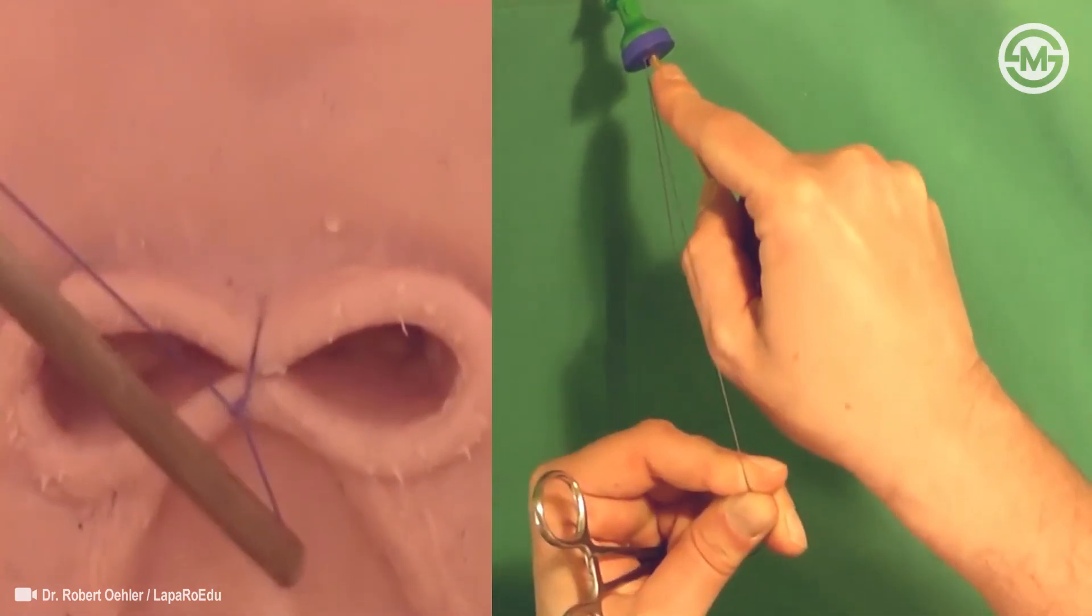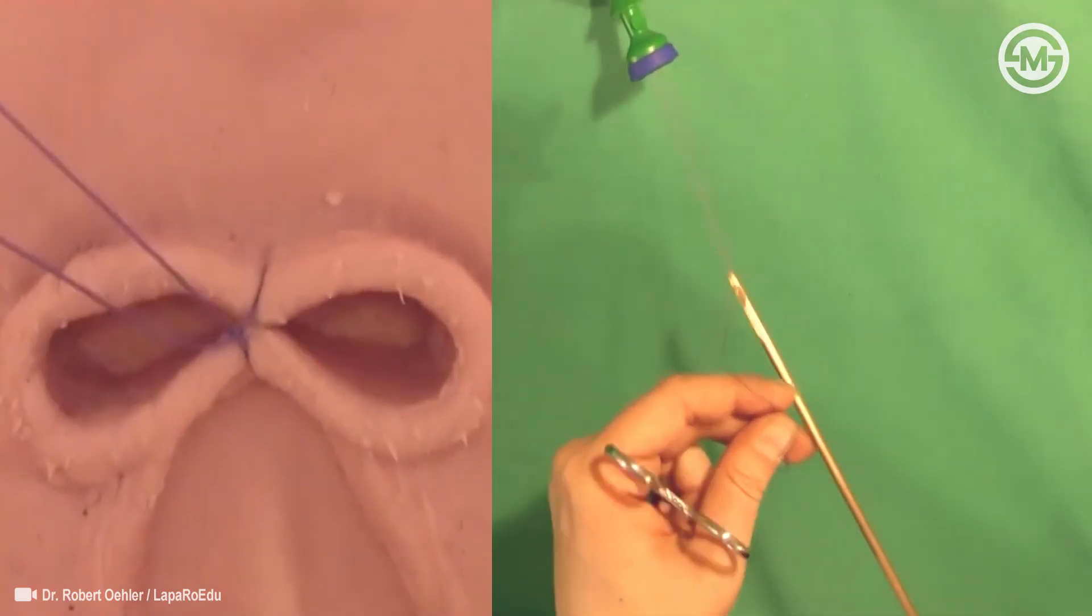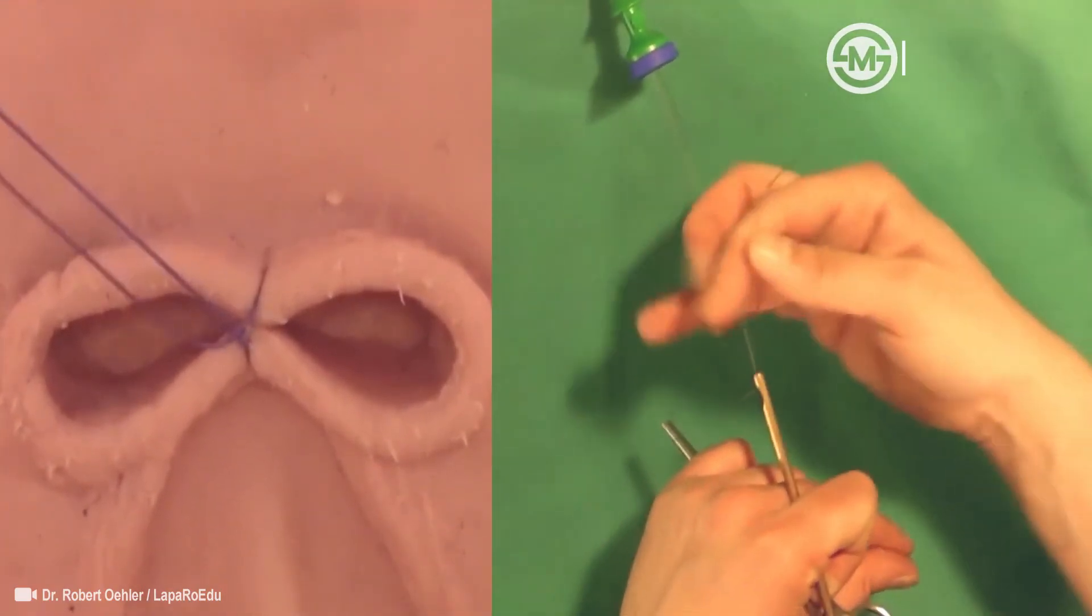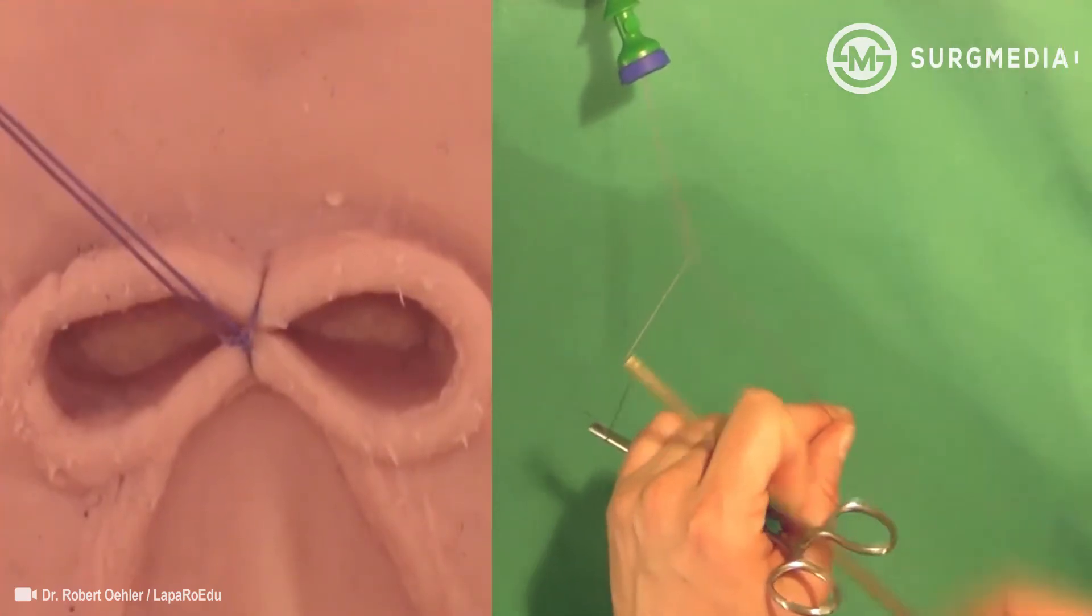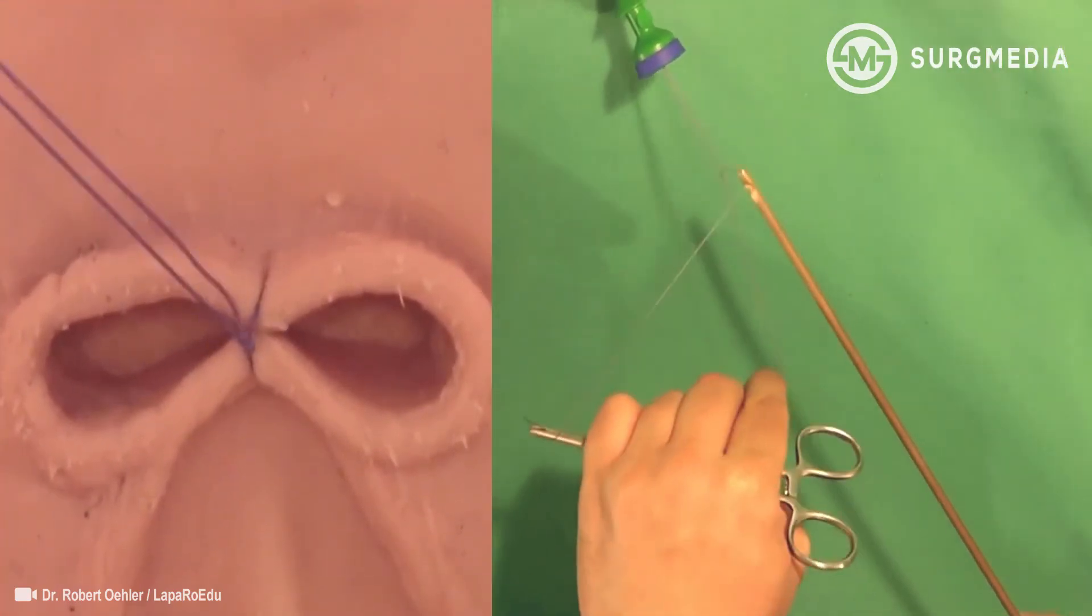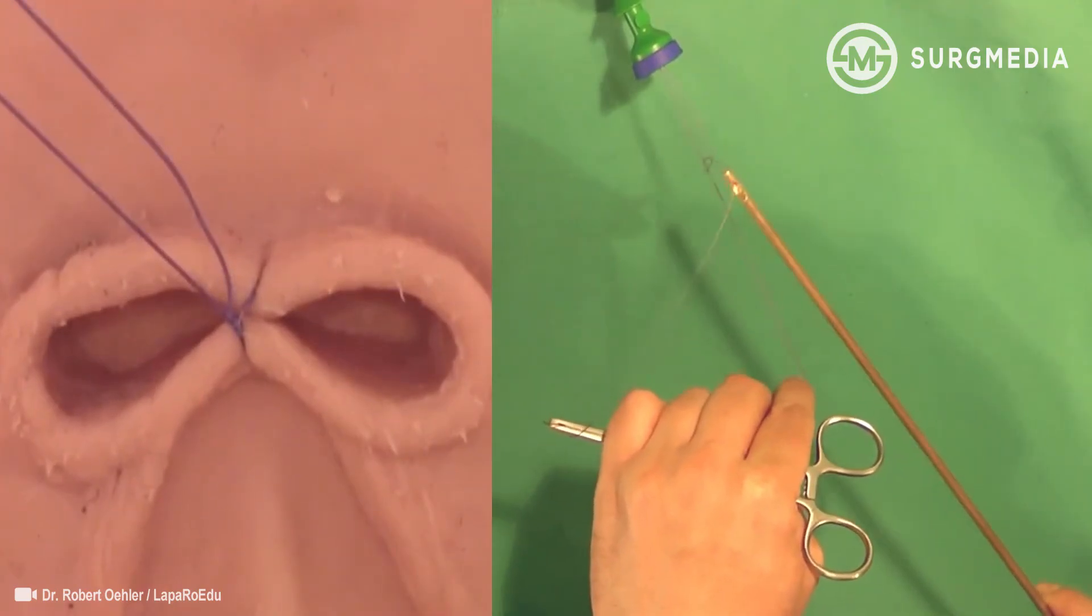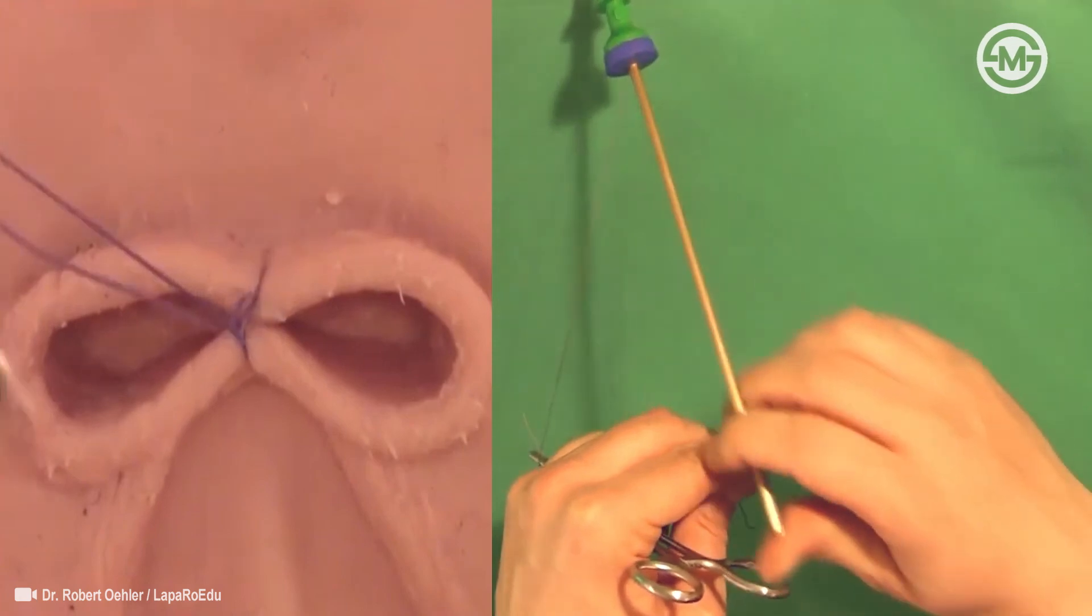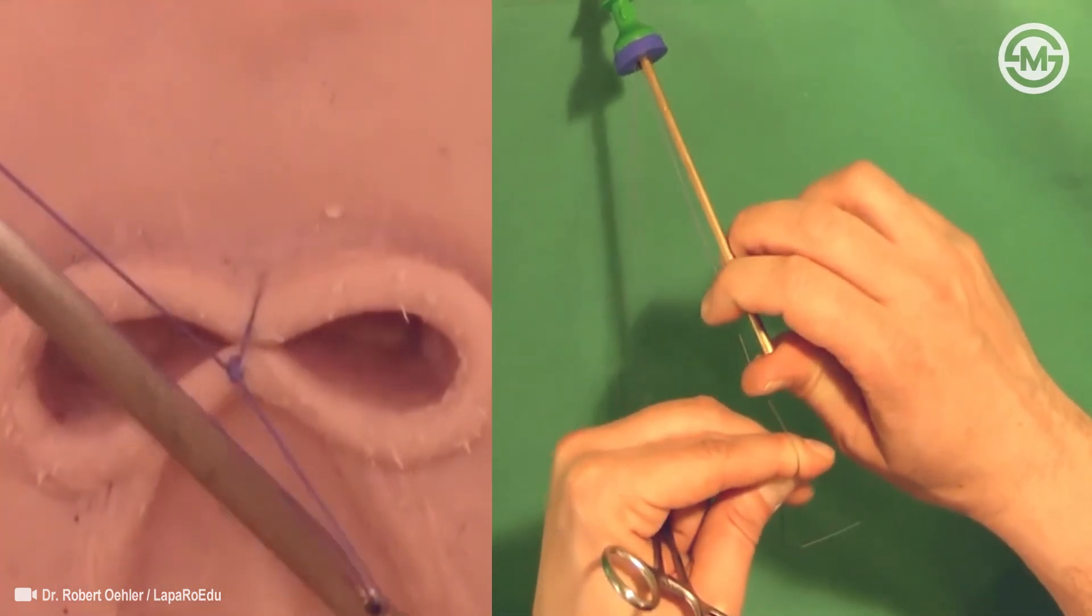Laparoscopic suturing and knot tying are two of the most difficult tasks in laparoscopic surgery. With a pelvic trainer as used here, techniques can be practiced in order to be well prepared for actual surgery. With regular practice, the improved skill will also transfer to other tasks in laparoscopy.